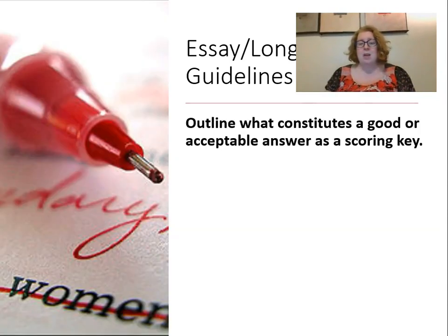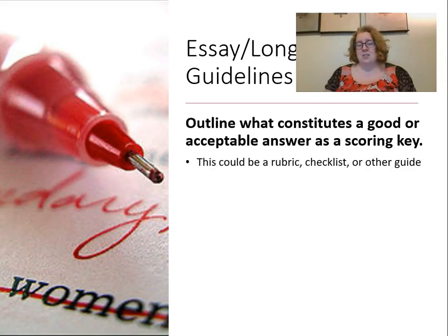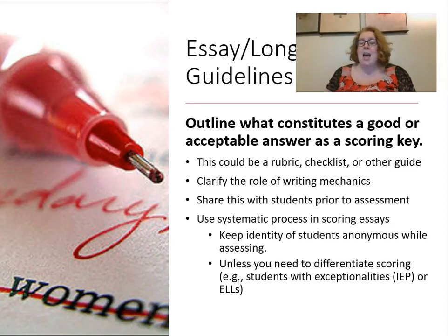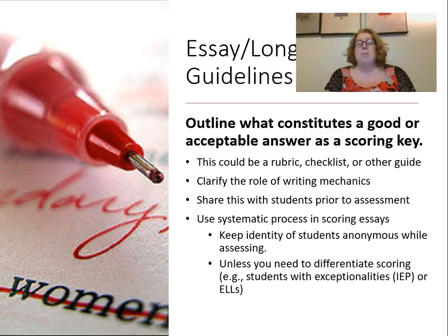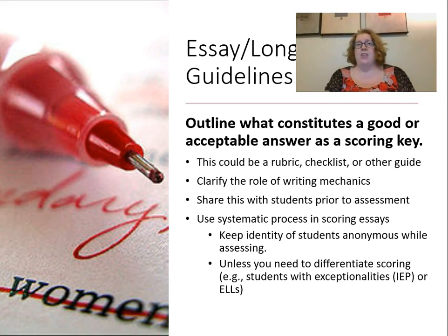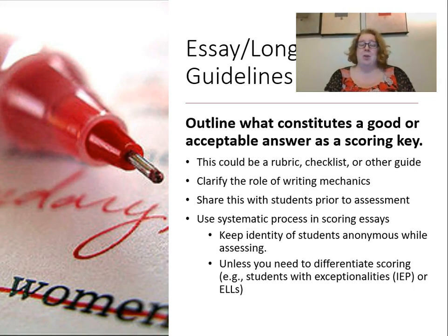Outline what constitutes a good or acceptable answer in a scoring guide — I'm going to ask you to do this in your content knowledge instrument. It could be a full rubric, a checklist, or a scoring guide. Clarify the role of mechanics and grammar. Share this with students prior to the assessment, whether it's the actual rubric or a description in the item itself. You might use the same rubric every time for essays in your class so students know ahead of time.